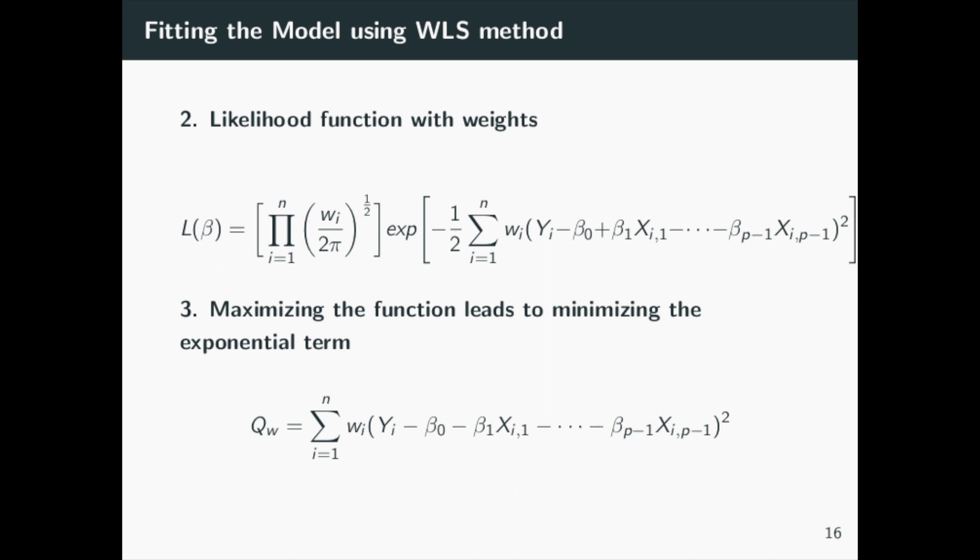We can now find the maximum likelihood estimators of the regression coefficients by maximizing the likelihood function, which is equivalent to minimizing the exponential. When we do so, we obtain Q_w. This is also known as the weighted least squares criterion.